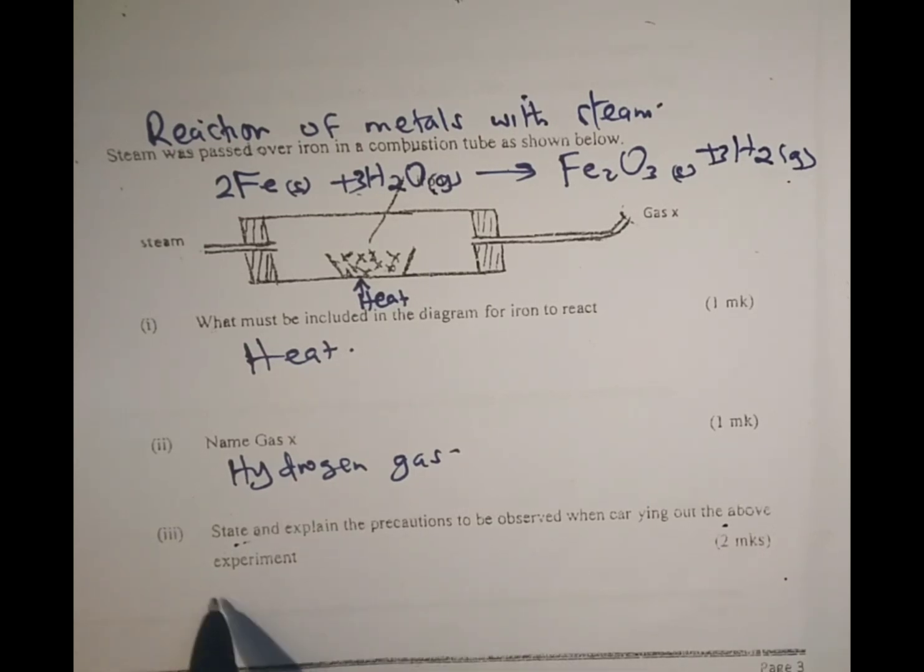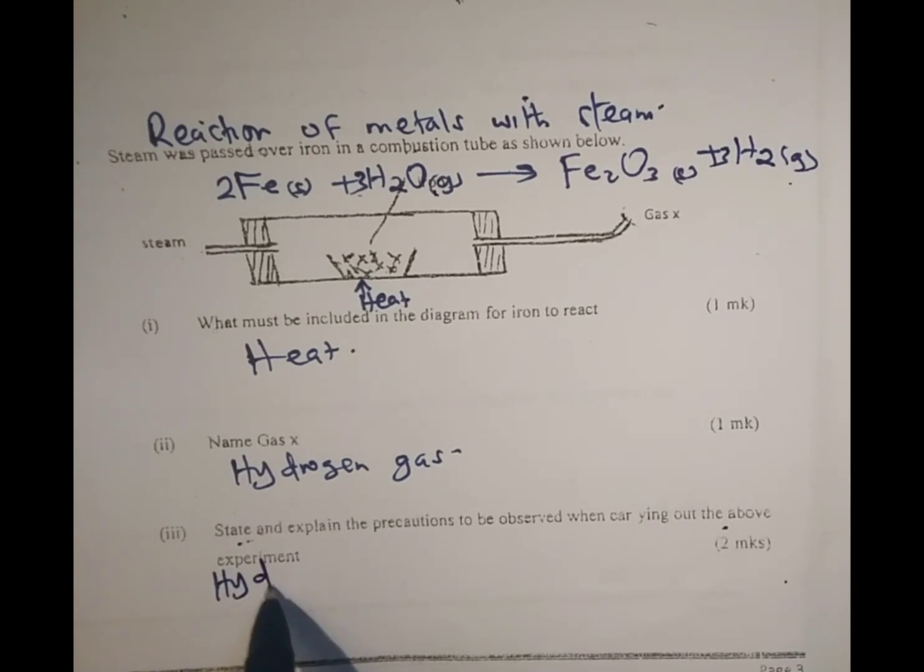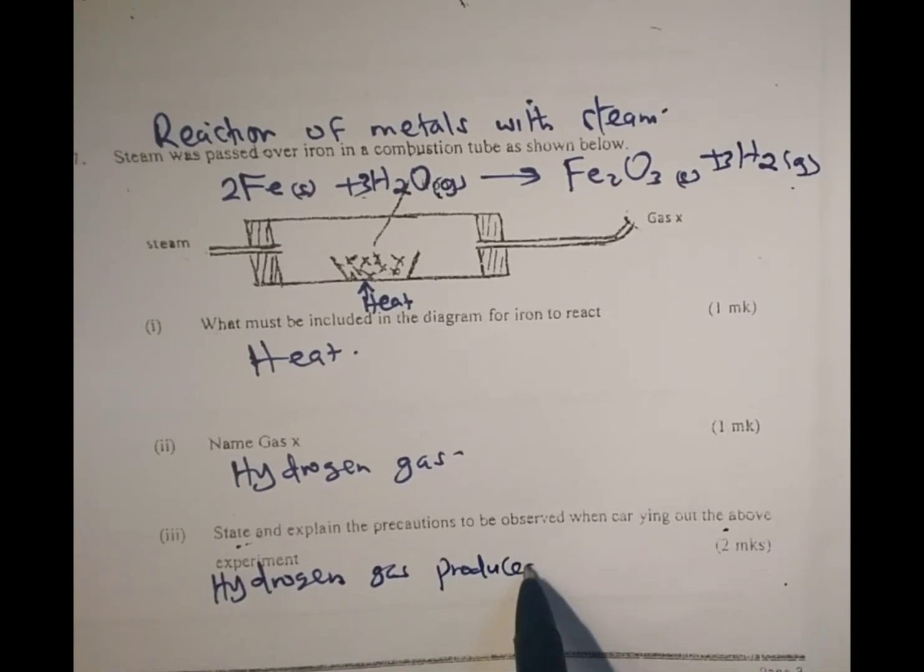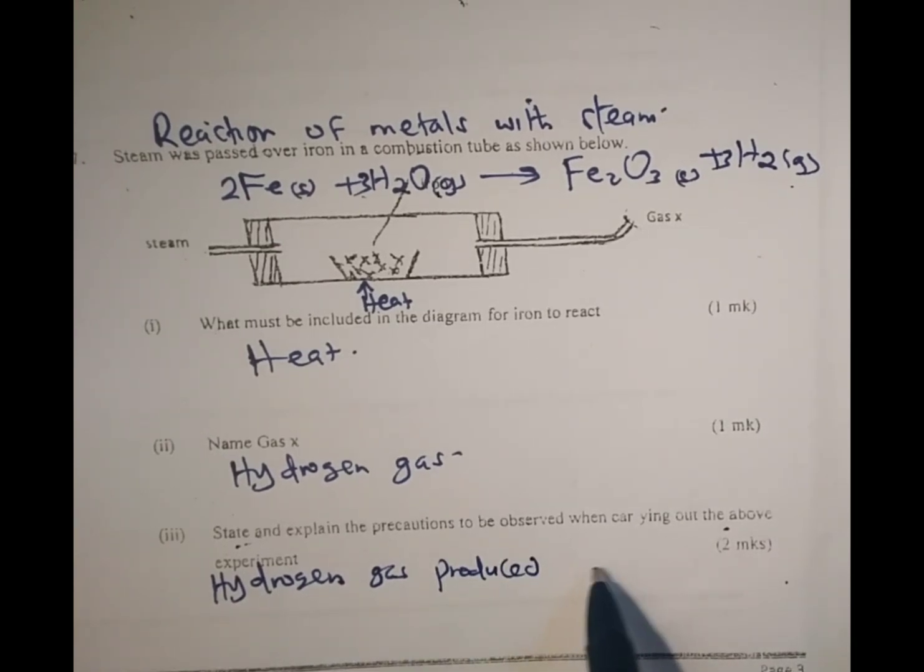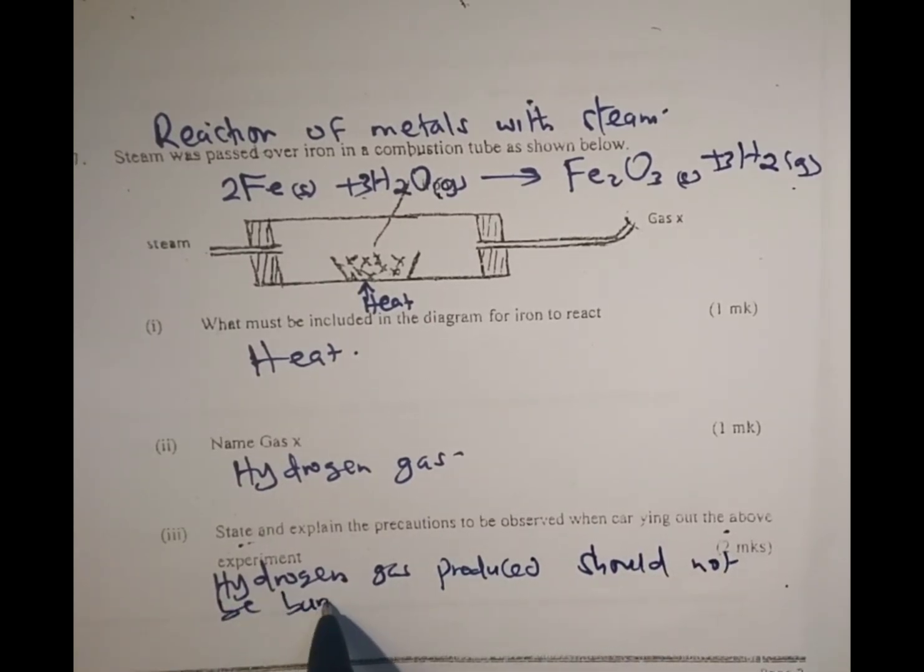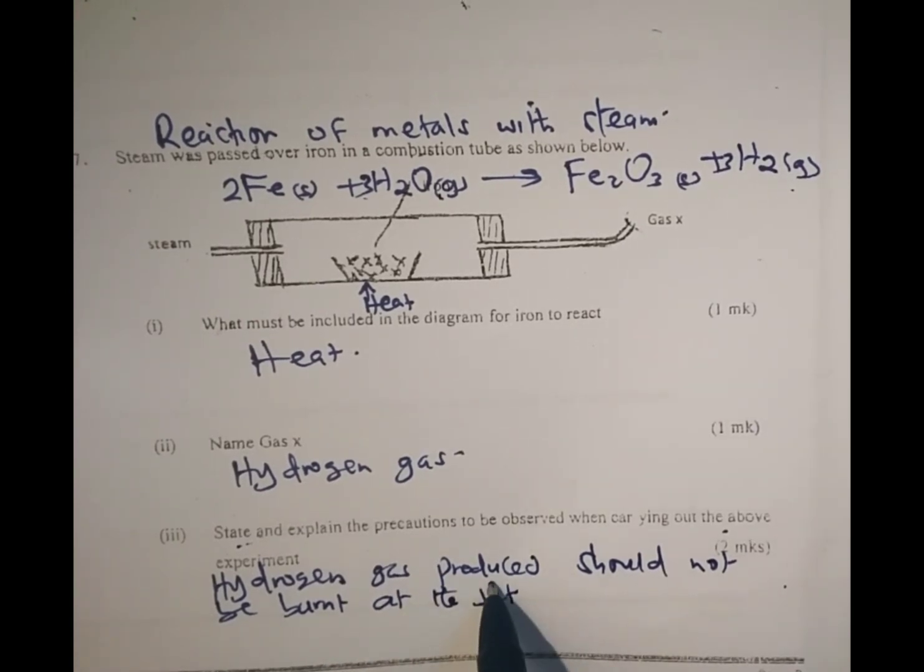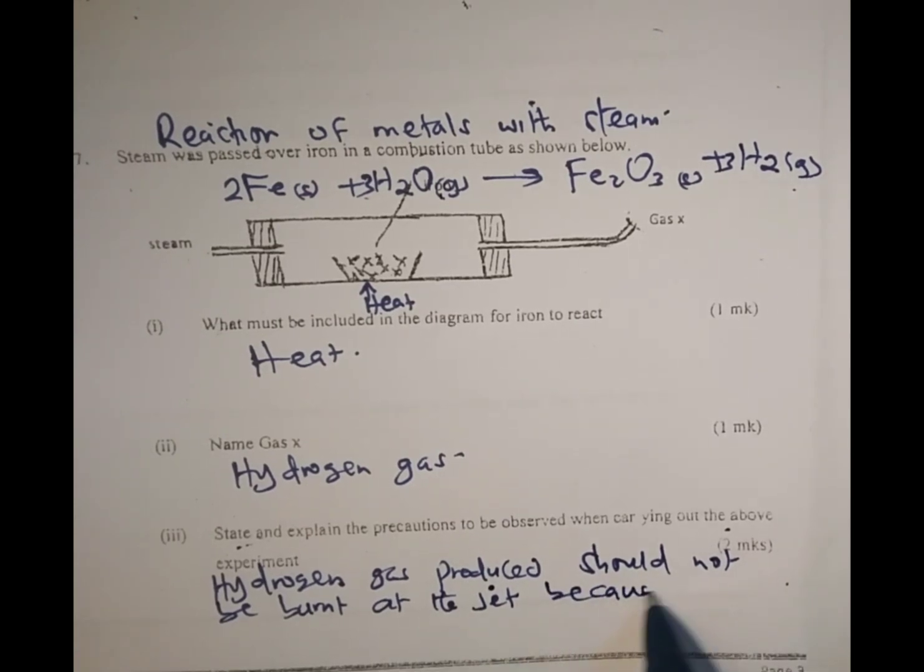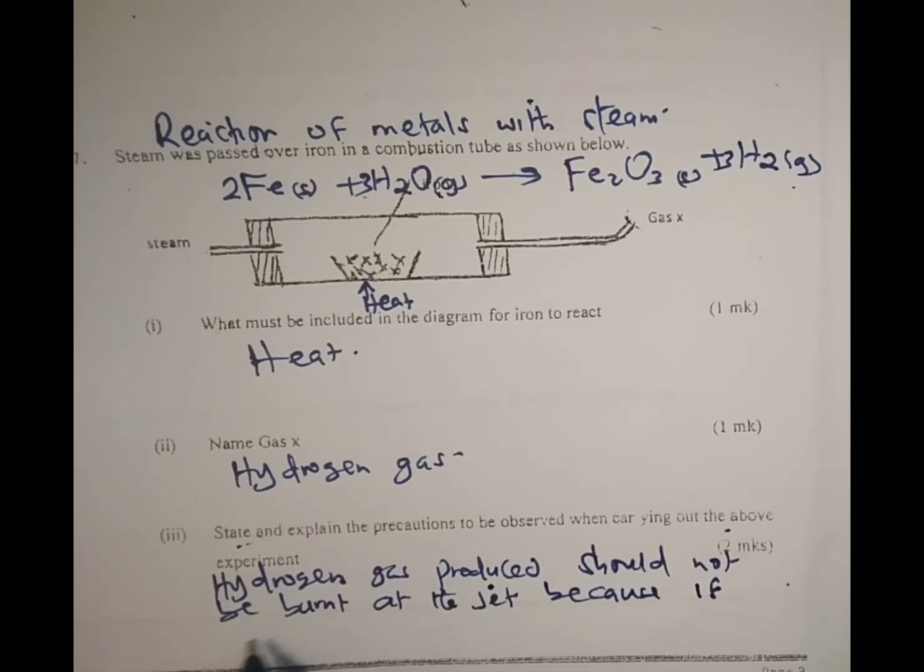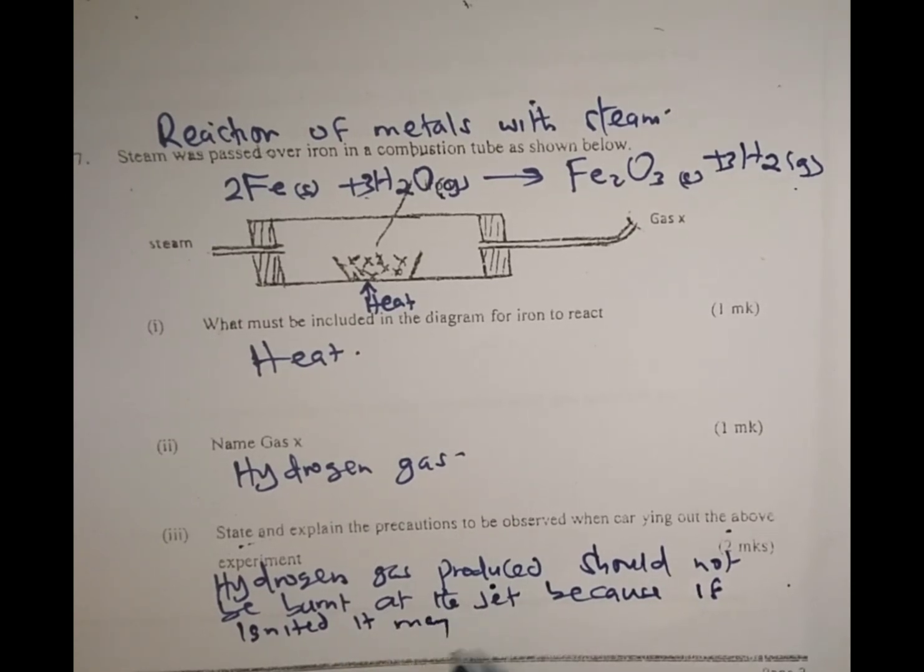The reaction is explosive and therefore we can say as one of the precautions, hydrogen gas produced should not be burnt at the jet. Why? Because if ignited, it may explode.